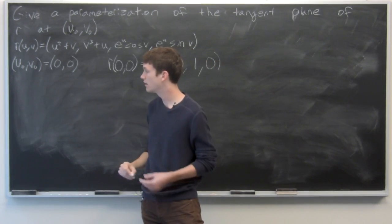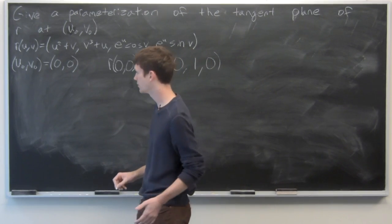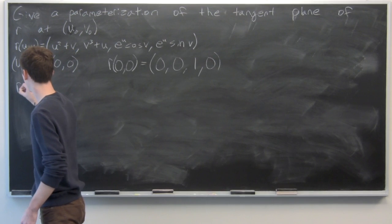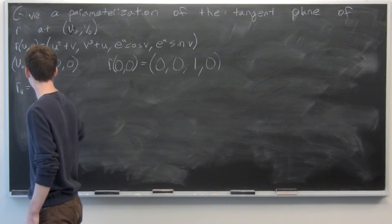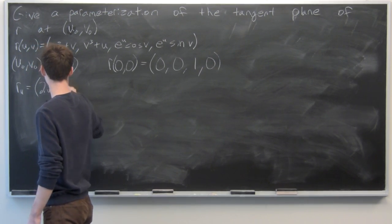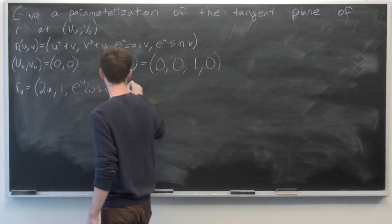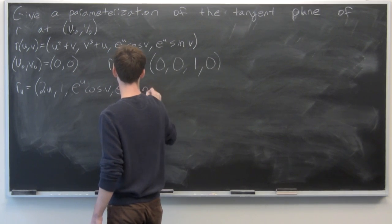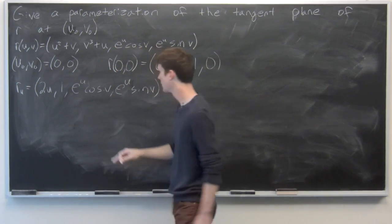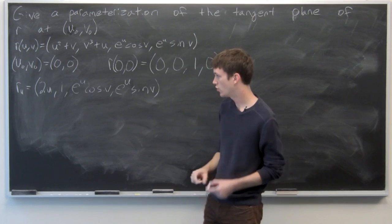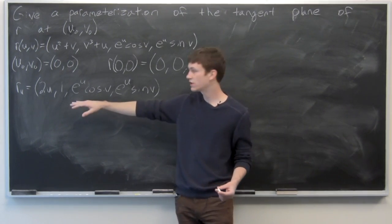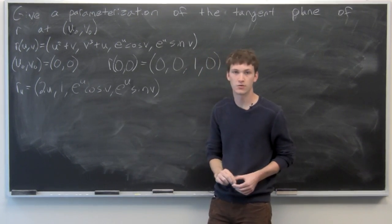We want to calculate the partial derivative of r with respect to u. We get rᵤ = (2u, 1, e^u cos(v), e^u sin(v)).